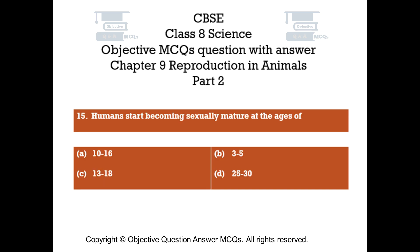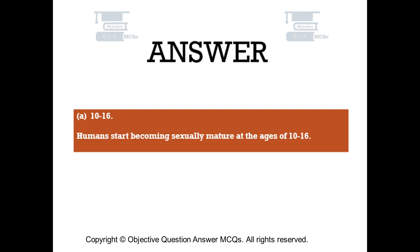Question number 15. Humans start becoming sexually mature at the ages of. Option A: 10 to 16. Option B: 3 to 5. Option C: 13 to 18. Option D: 25 to 30. The right answer is Option A: 10 to 16. Humans start becoming sexually mature at the ages of 10 to 16.